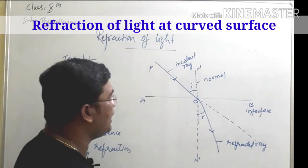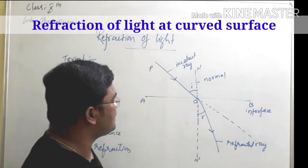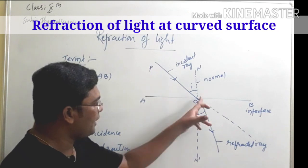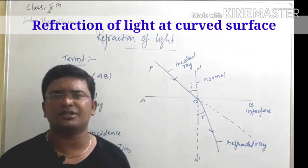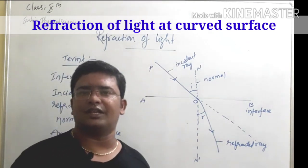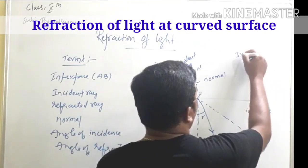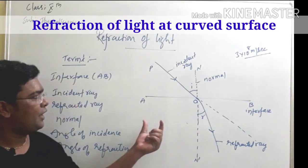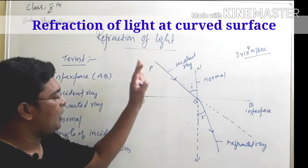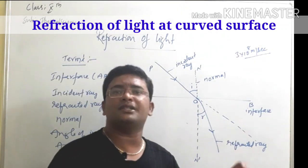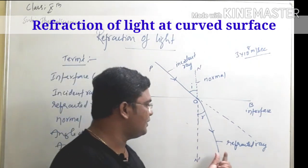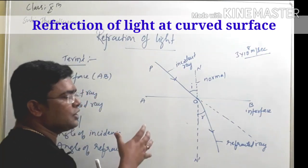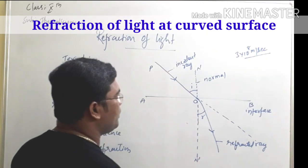So in refraction, when light has entered from one medium to another medium, it has changed its direction. The question is: why does light change its direction? We know light travels with a speed of 3×10⁸ meters per second. When light travels from one medium to another medium during refraction, it decreases its speed — that is the reason for the change in direction.